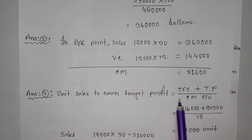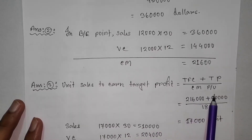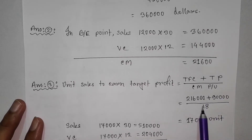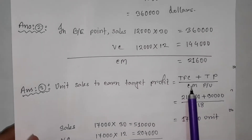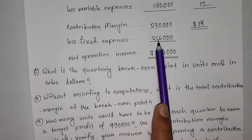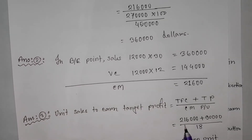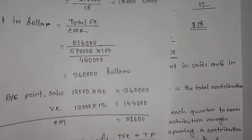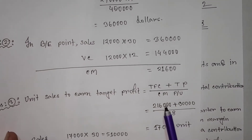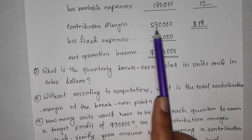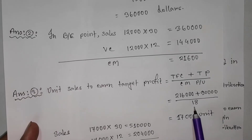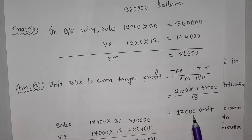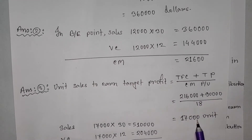Units to earn target profit equals total fixed cost (TFC) plus target profit (TP) divided by CM per unit. TFC is total fixed cost, TP is target profit, CM per unit is contribution margin per unit. CM per unit is $8 per unit. So we have 8 per unit, giving us approximately 1,000 units needed to earn $90,000 profit.